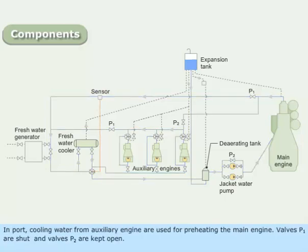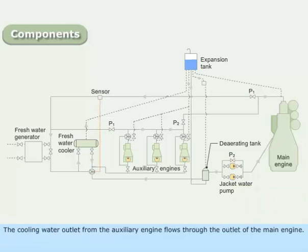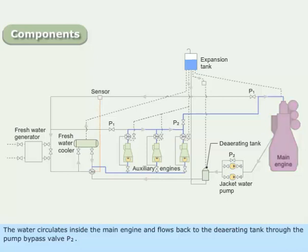In port, cooling water from the auxiliary engine is used for preheating the main engine. Valves P1 are shut and valves P2 are kept open. The cooling water outlet from the auxiliary engine flows through the outlet of the main engine. The water circulates inside the main engine and flows back to the de-aerating tank through the pump bypass valve P2.